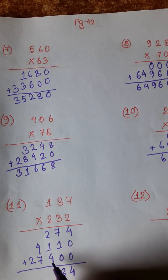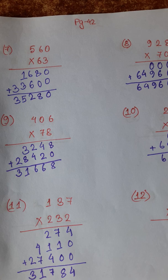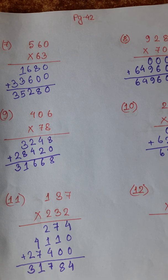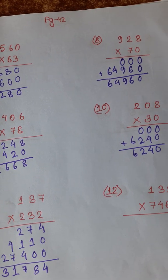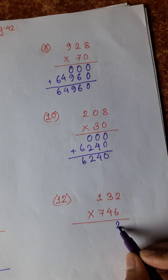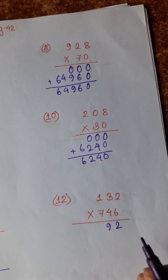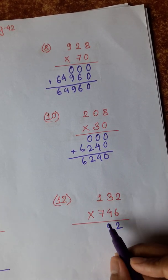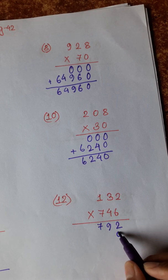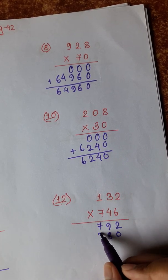2 plus 1 is 3, plus 4 is 7. 7 plus 4 is 11, 1. 2 plus 1 is 3. 6 twos are 12, 1. 6 twos are 18 plus 1 is 19, 1. 6 twos are 6 plus 1 is 7. 4 twos are 8. 3 twos are 12, 1.